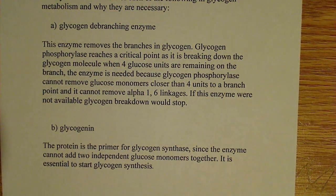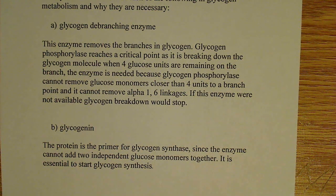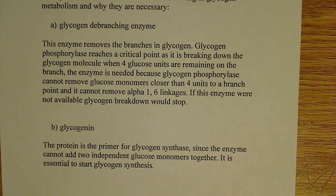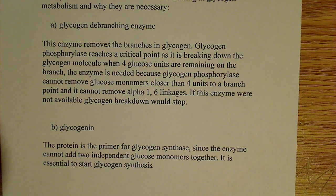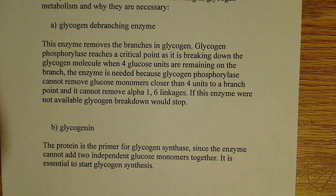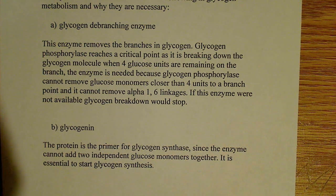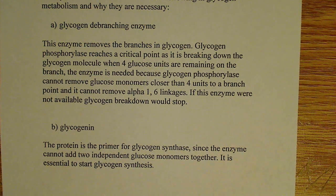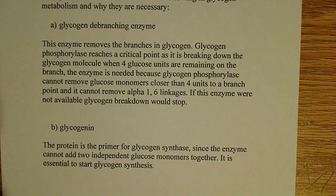What the de-branching enzyme does is transfer those four glucose molecules to another branch, and it also allows the alpha-1-6 linkage to be removed as well. So it plays a dual role — it removes a branch when we get to that critical value. If it were not available, glycogen breakdown would stop, which would be terrible if we really needed glucose, such as during exercise or any activity requiring a lot of energy.